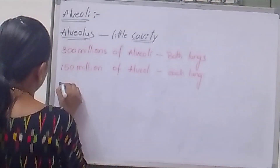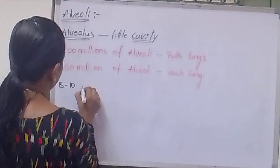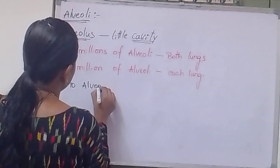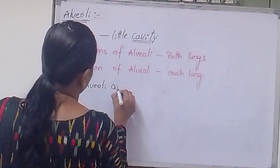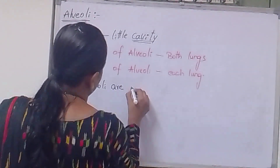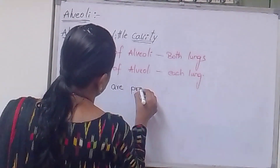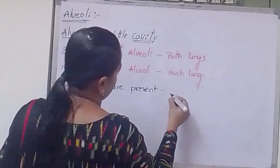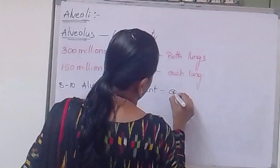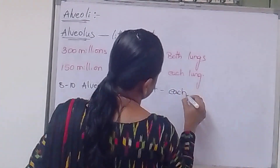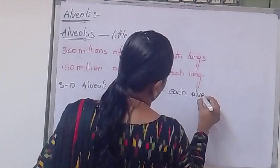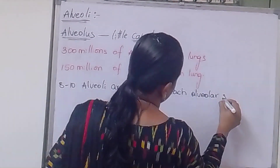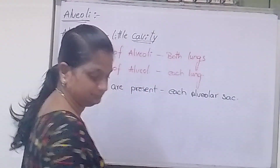8 to 10 Alveoli are present in each alveolar sac.